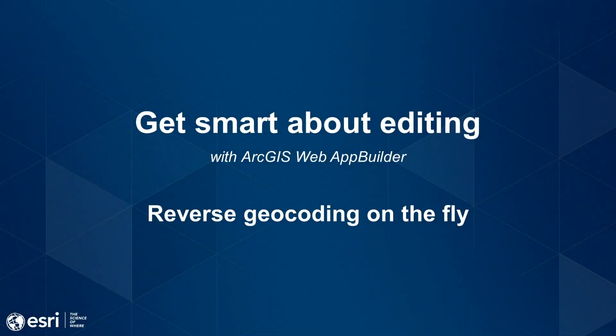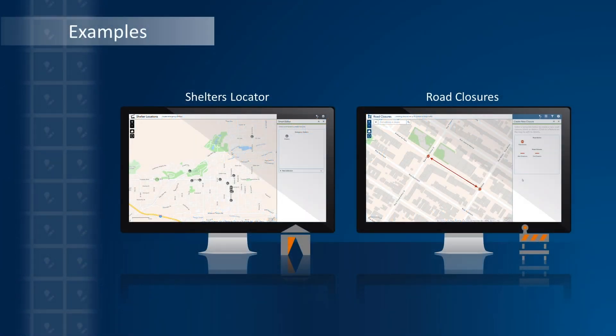Hello and welcome, this is Alex Vizzina, and today I demonstrate how you can use the Smart Editor widget in ArcGIS Web App Builder to collect location information such as addresses and coordinates while editing data. This video is part of the video series Get Smart About Editing. Stay tuned as more videos are made available periodically. In our two examples today, I will use one of my favorite capabilities in Smart Editor: Attribute Actions.